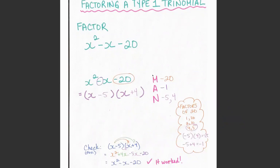In order to figure out those two numbers, I'm going to use the acronym MAN. M stands for multiply, A stands for add, and N stands for my numbers.